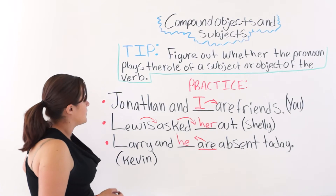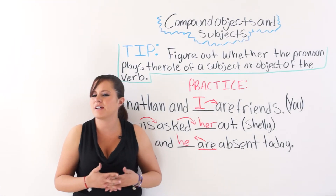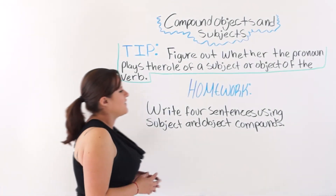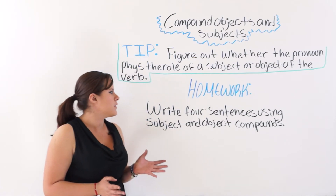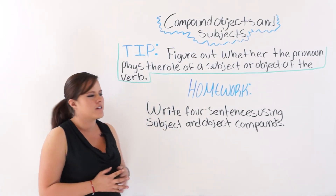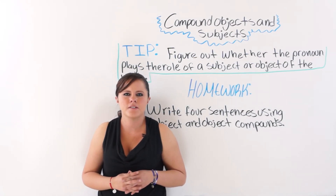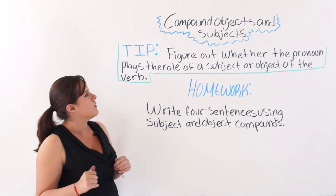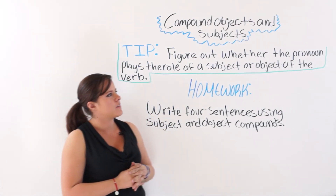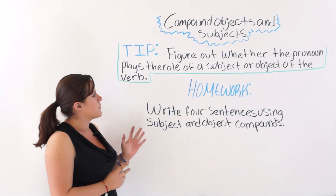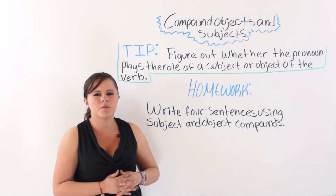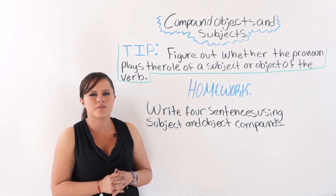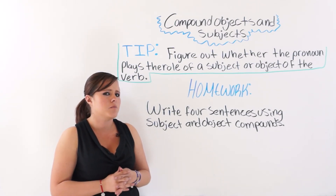Next I will leave you some homework, because you need to practice a lot to improve your English. You are going to write four sentences using subject and object pronouns. Remember: first figure out whether the pronoun plays the role of the subject or object of the verb. If it's the subject, use personal pronouns; if it's the object, use object pronouns.